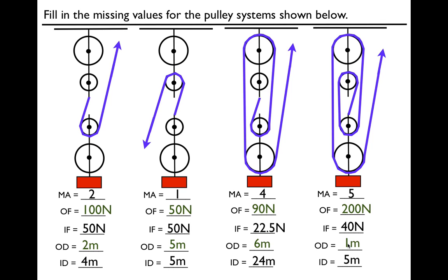So that's four problems — you should see the pattern. The input force is the output force divided by the mechanical advantage. The input distance is the output distance times the mechanical advantage. When the mechanical advantage is greater than one, the input force is less than the output force, but the input distance is greater than the output distance — each by a factor of the mechanical advantage. Thank you very much for watching. If you found that helpful, leave me a thumbs up or a comment in the comment section below.